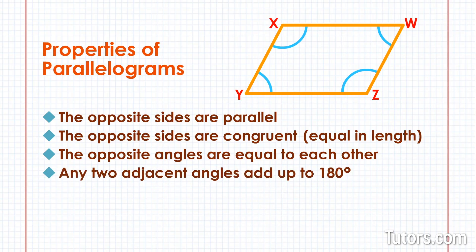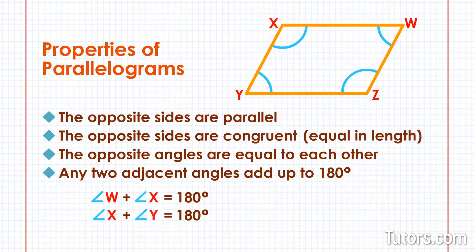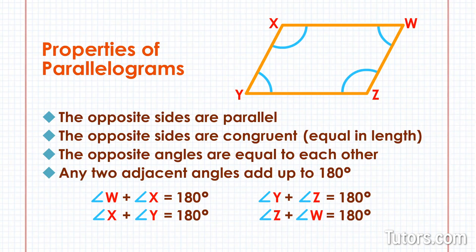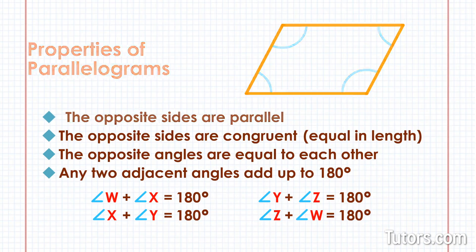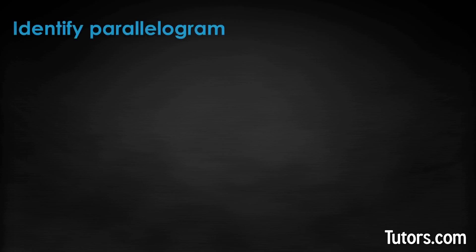Any two adjacent angles of a parallelogram add up to 180 degrees, so you can state four equations: angle W plus angle X equals 180°; angle X plus angle Y equals 180°; angle Y plus angle Z equals 180°; and angle Z plus angle W equals 180°. This means any two adjacent angles are supplementary. Using the properties of diagonals, sides, and angles, you can always identify parallelograms.